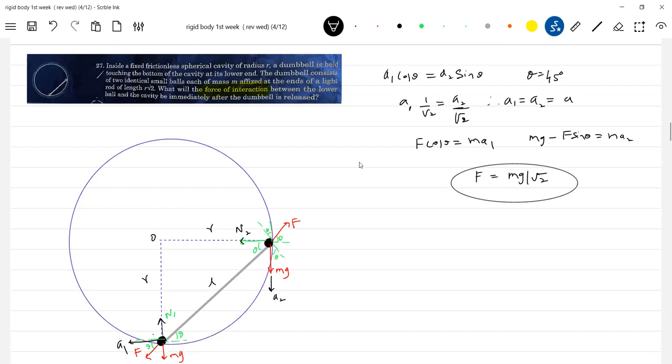Mg by root 2. No, no, let's come to the interaction force. So, N1. N1 minus mg minus F sin theta equal to zero. We know F, we know mg, so from that we'll get N1. N1 minus this will be mg by root 2. This is 1 by root 2.